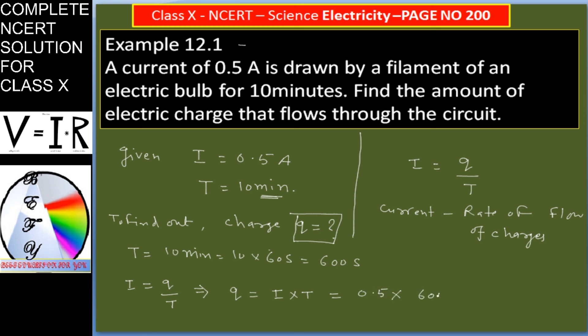Into 600 seconds, and the result is 300 coulomb. Unit of charge is coulomb, so charge is 300 coulomb. We have to determine charge flowing through the circuit and that is 300 coulomb.